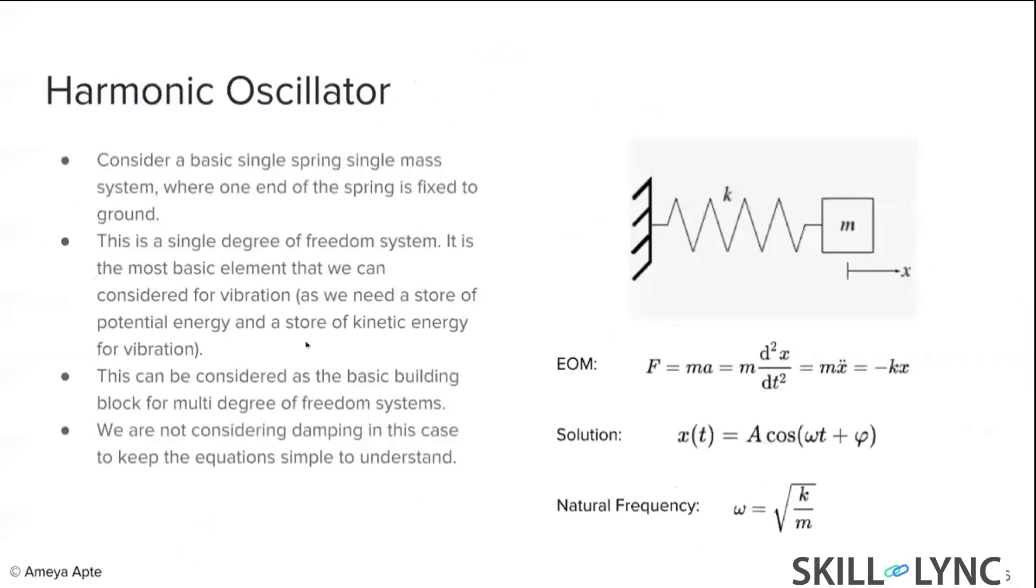I'll be starting from the very basic model that we have, a harmonic oscillator. As you can see in the diagram on the right here, you have a mass which can basically move in the X direction. Then there's a spring connected to it, which has stiffness K, and the other end is connected to ground. This would be a very basic unit of modeling a vibration. For a vibration, you need a store of potential energy, which would be the strain in this case, and a store of kinetic energy, which would be the mass. The energy will exchange between these to lead to vibration.